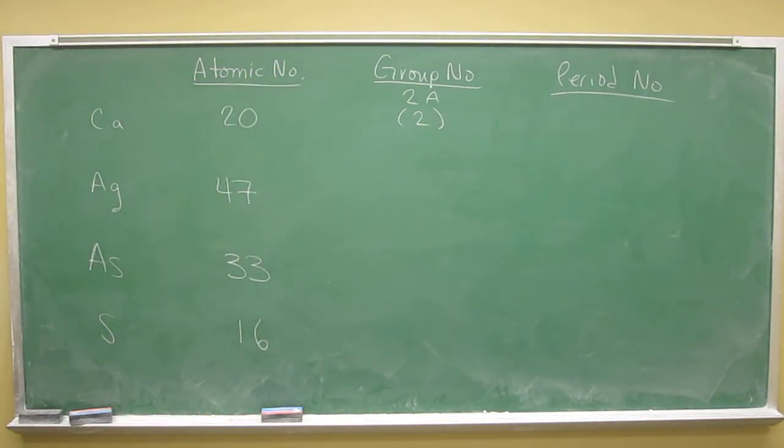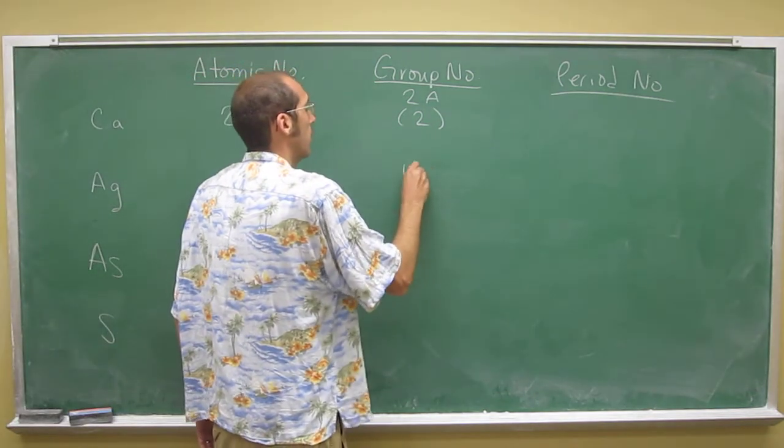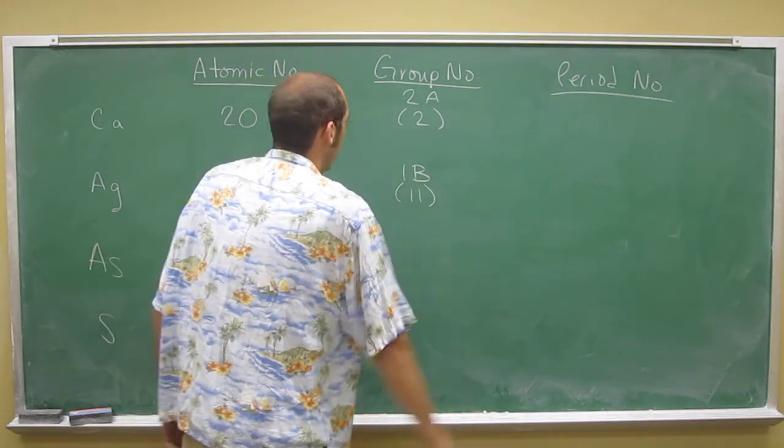For silver, it's over in the transition metals there, so you see it's group 1B or 11.